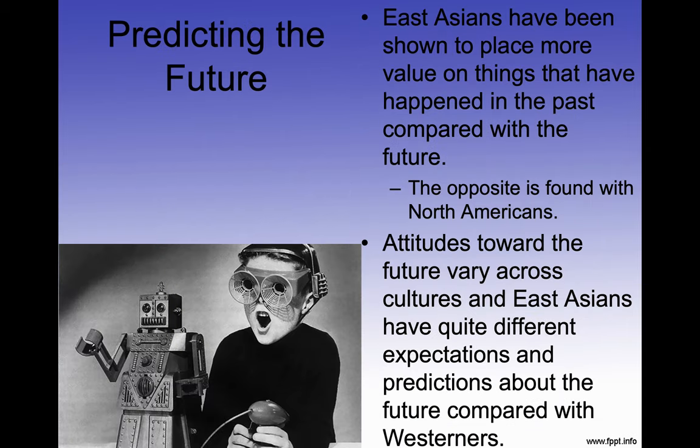East Asians have been shown to place more value on things that have happened in the past compared with the future — the opposite is found with North Americans. Attitudes toward the future vary across cultures, and East Asians have quite different expectations and predictions about the future compared with Westerners. East Asians look backwards more than Westerners do; Westerners are always looking toward the future.